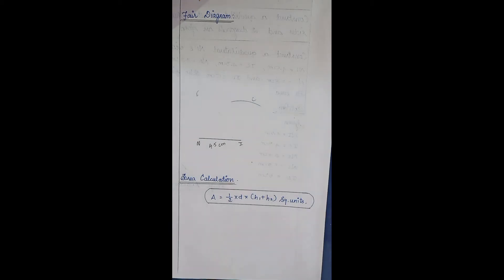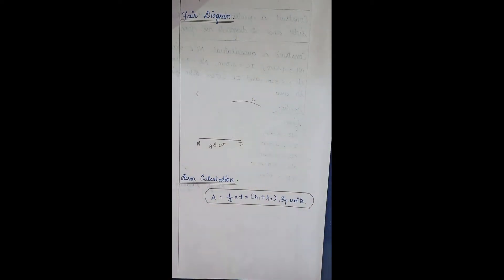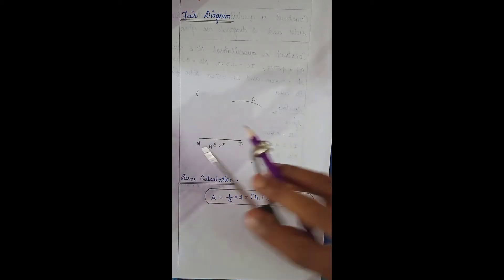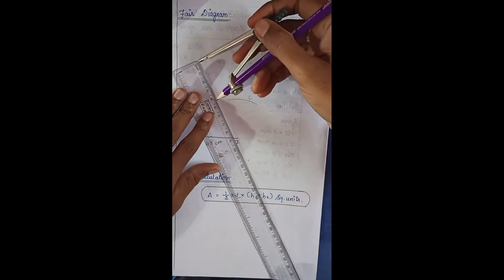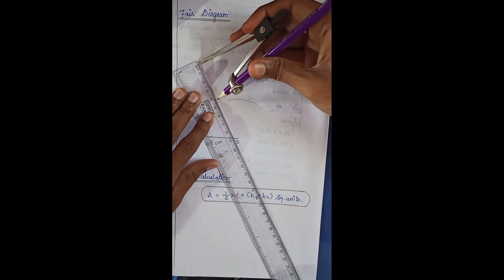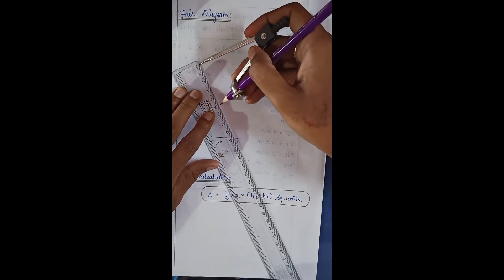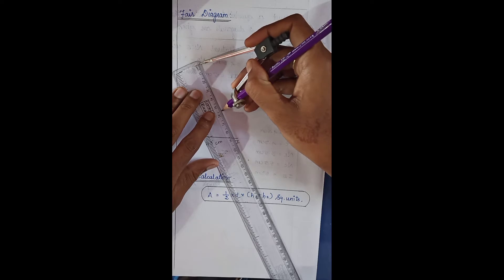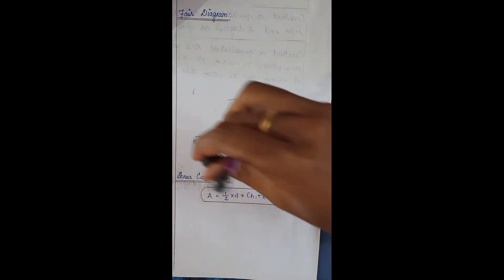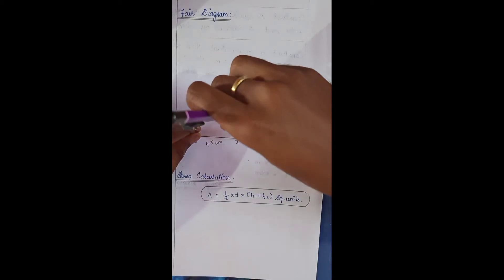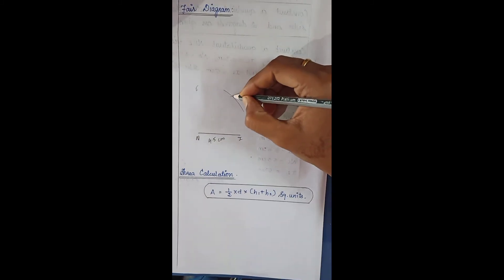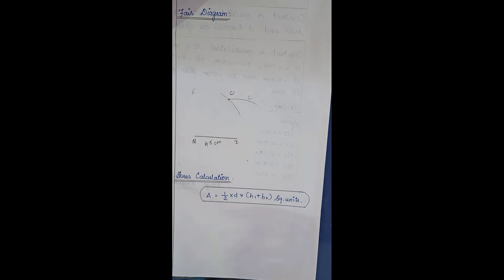NE = 3.5 cm, so from N we will keep the value 3.5 cm. But first we should complete the C point. NC = 5.5 cm, so from N to C is 5.5 cm. We measure from zero to 5.5 cm and cut the arc. Now we are getting one point, and this point is known as the C point.